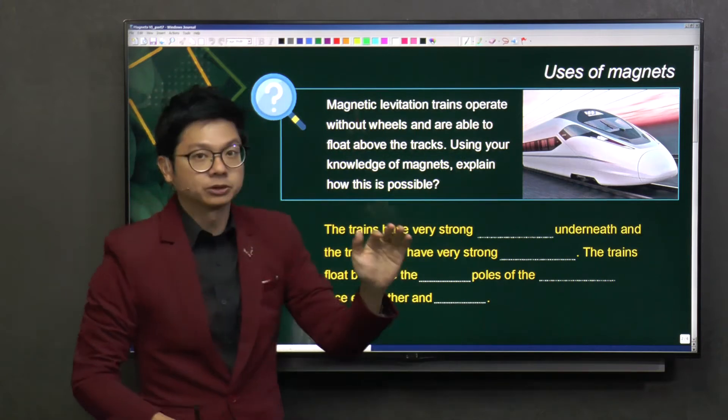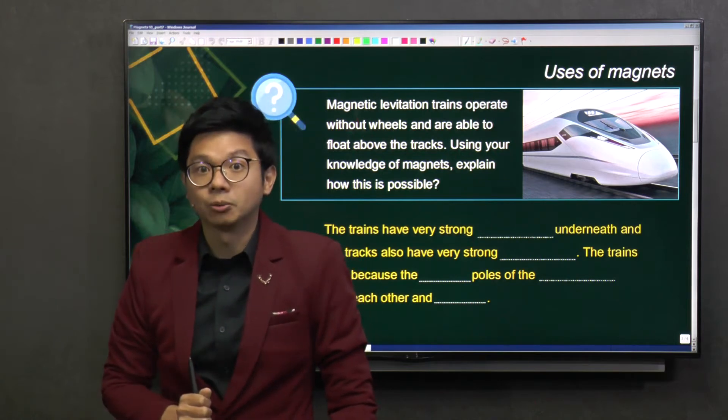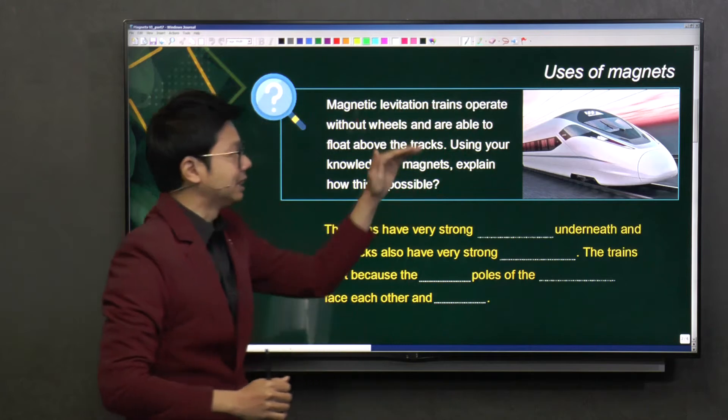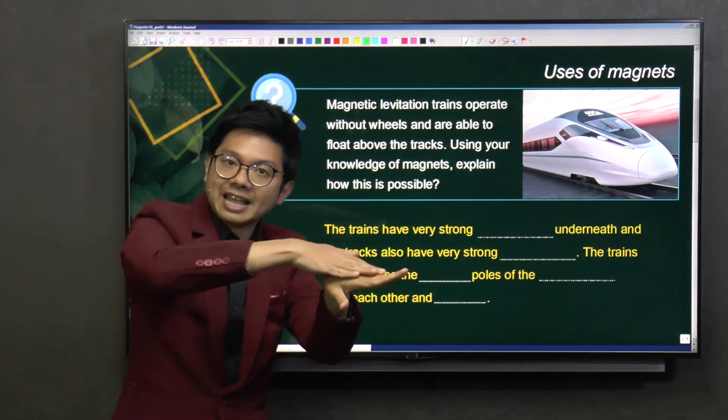Guys, you know that trains, like for example, our MRT train, they travel at a speed of about 60 km per hour. Whereas for this Maglev train, because they are levitated, they are not resting on the track, so there is less friction.